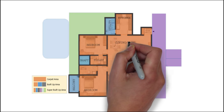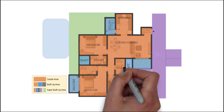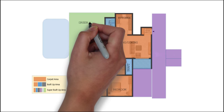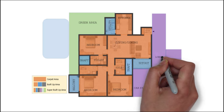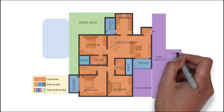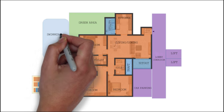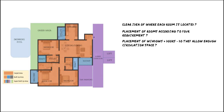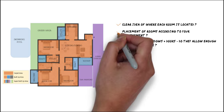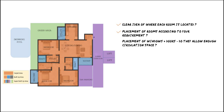By analyzing a unit plan, you can get a better idea of what the finished house will look like and check to see if it meets your requirements. Here are a few pointers: do you have a clear idea of where each room is located? Is the placement of rooms according to your requirement? Also determine the placement of windows and doors and check if they allow enough circulation space.